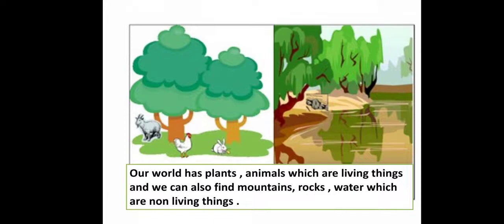In my previous video, we had learnt about plants and animals, the two important groups of living things. Our world, our planet Earth has plants and animals, but they are living things. We can also find mountains, rocks, water — those are non-living things.